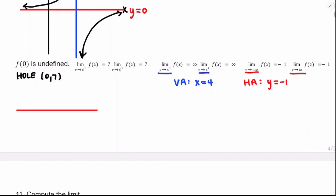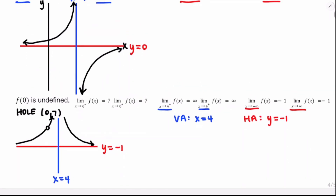For the final sketch: hole at (0, 7), vertical asymptote at x equals 4, horizontal asymptote at y equals negative 1. On both sides of x equals 4, y approaches positive infinity. I'll draw in the asymptotes and sketch the curve with the hole at x equals 0. The y-axis goes right through the hole, and the x-axis and scale are approximate — it's just a sketch.